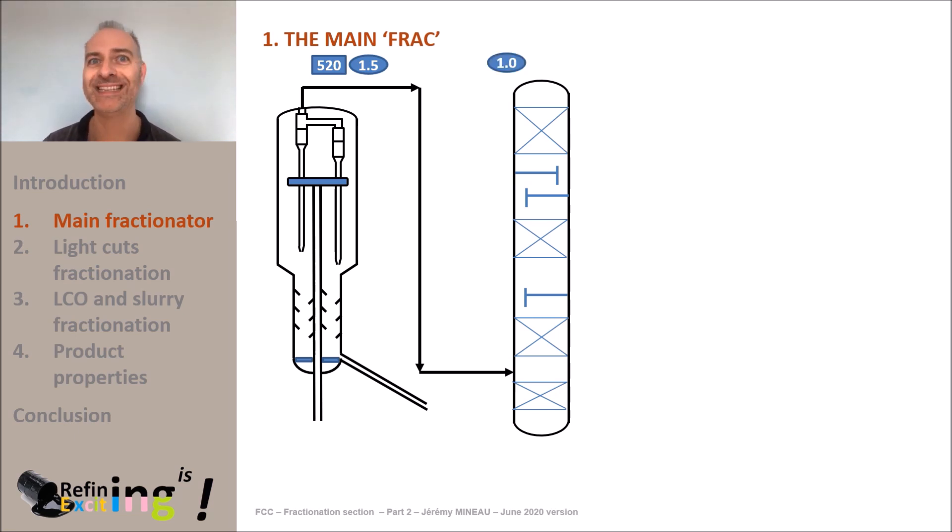But in fact it is more the opposite, since it is this main fractionator overhead pressure which sets the pressure of the reaction section. This column is typically equipped with 40 fractionation trays or the equivalent in packing height.